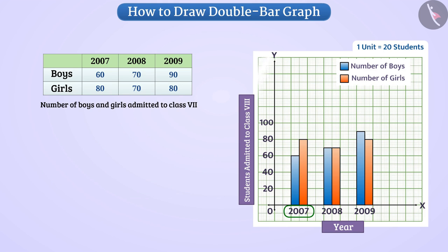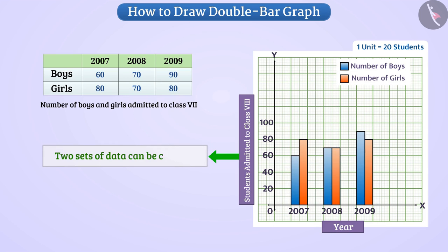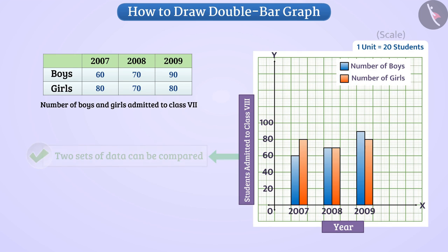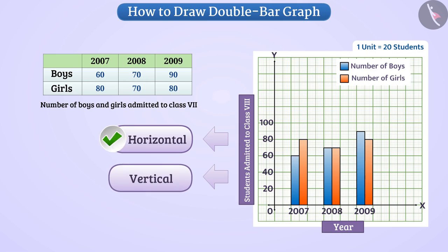Thus, in a double bar graph, two different types of data are represented as pairs of bars so that the two sets of data can be compared. The same scale is used for both figures. Like the bar graph, the double bar graph can also be drawn horizontally or vertically. We will understand more about this in the next video.